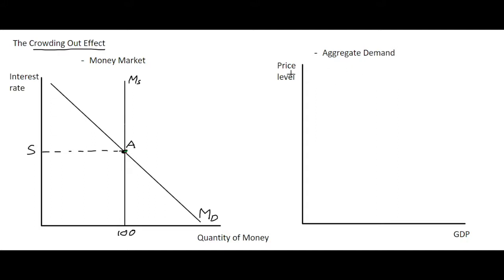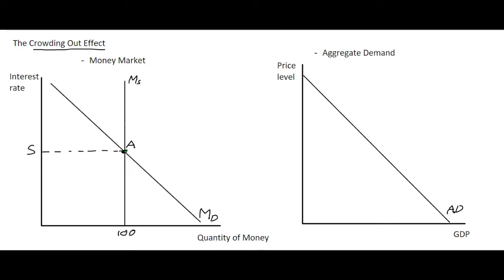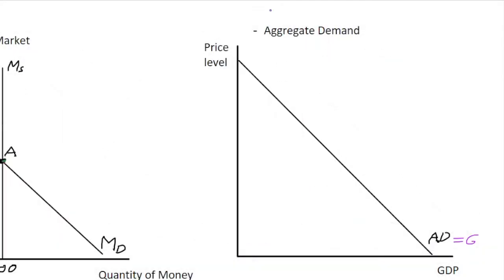On the right hand side we have aggregate demand, which is a downward sloping line showing a negative relationship between the price level and spending on goods and services in the economy. Aggregate demand is made up of five different components of expenditure, and one of these components includes government spending. So if the government were to implement expansionary fiscal policy,